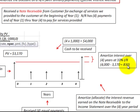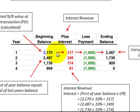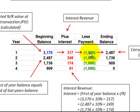The total interest is four thousand minus three thousand one hundred seventy, which equals eight hundred thirty dollars. Now let's calculate interest revenue for each of the next four years step by step. We start with a beginning balance of thirty-one hundred seventy dollars — the present value of the note. We take ten percent times thirty-one hundred seventy to get interest of three hundred seventeen dollars. Adding the beginning balance plus interest and subtracting the thousand-dollar payment gives an ending balance of twenty-four hundred eighty-seven dollars, which is the carrying value of the note receivable.